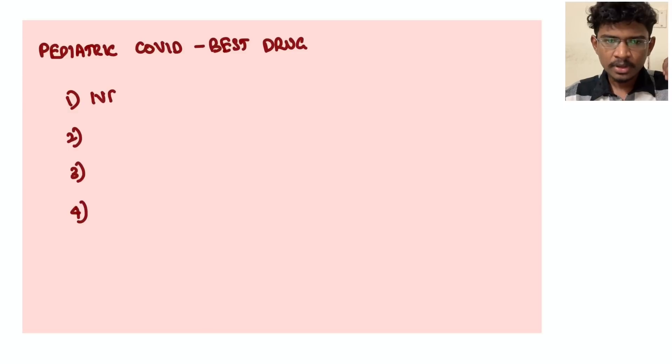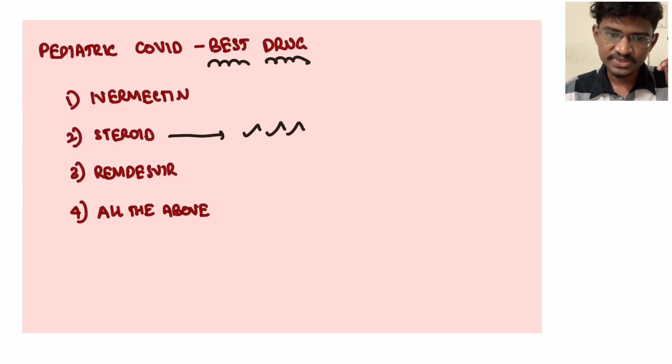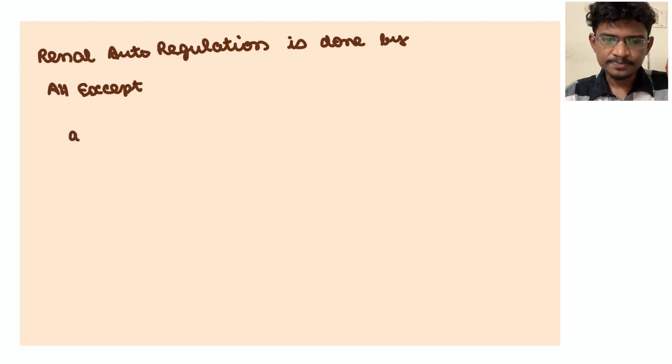This is Wegener's in short. Pediatric COVID: best drug is ivermectin, steroids, remdesivir, or all the above? Actually, steroids only have the documented benefit in COVID, so you should go always with steroids only.